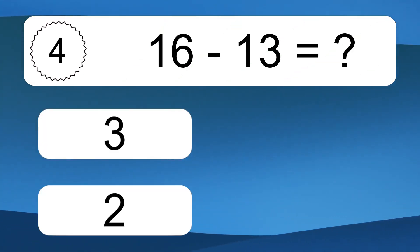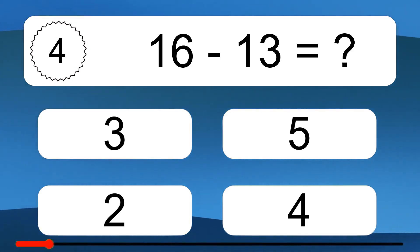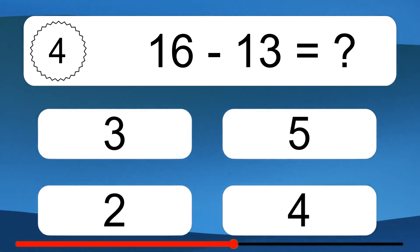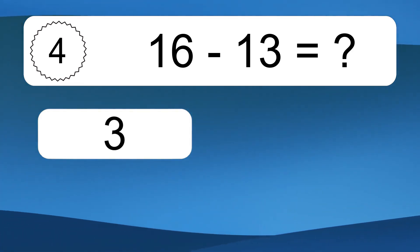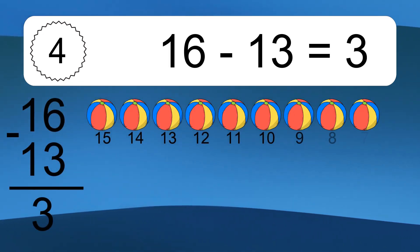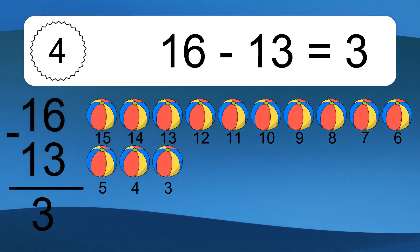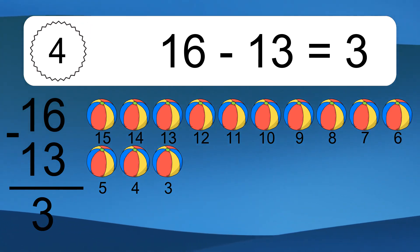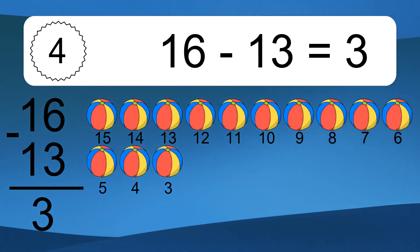16 minus 13 equals what? 16 minus 13 equals 3. Let's count it. 15, 14, 13, 12, 11, 10, 9, 8, 7, 6, 5, 4, 3.